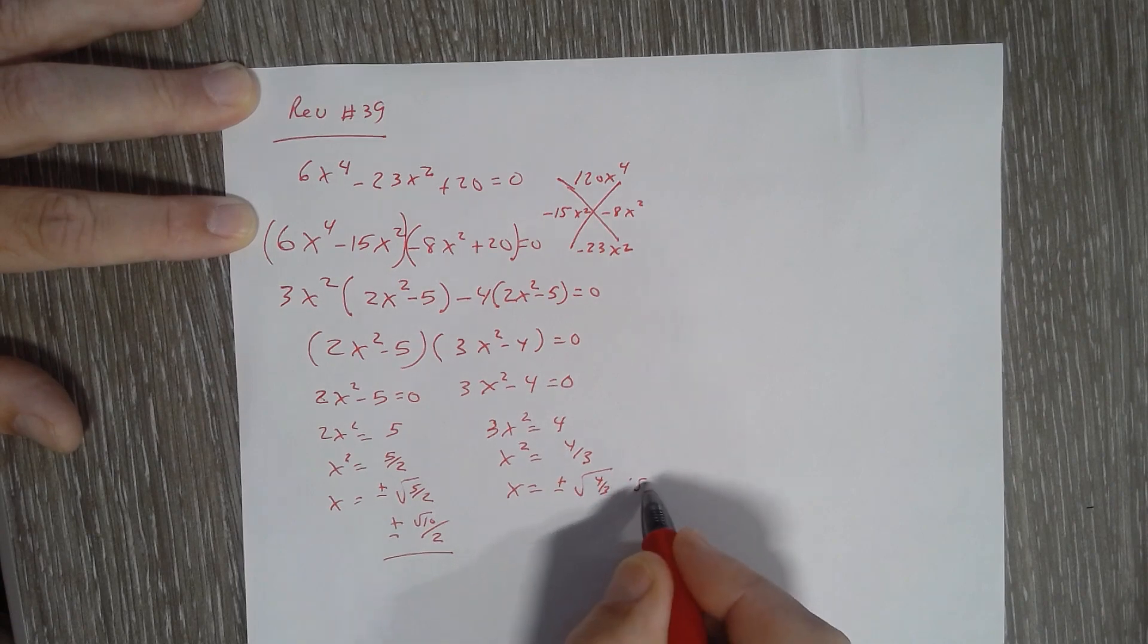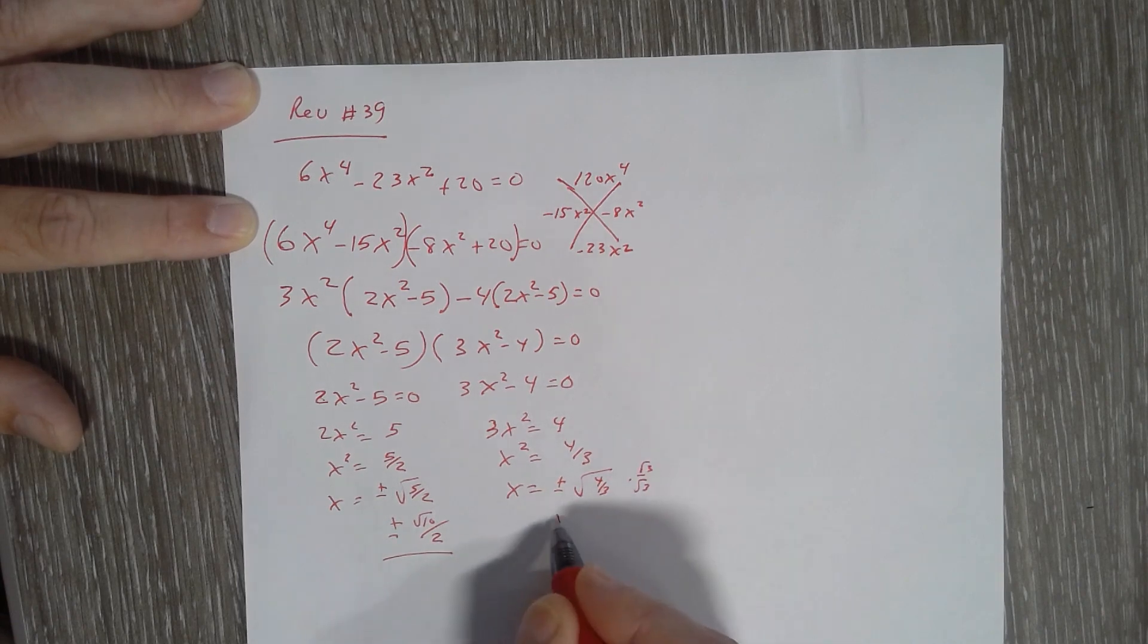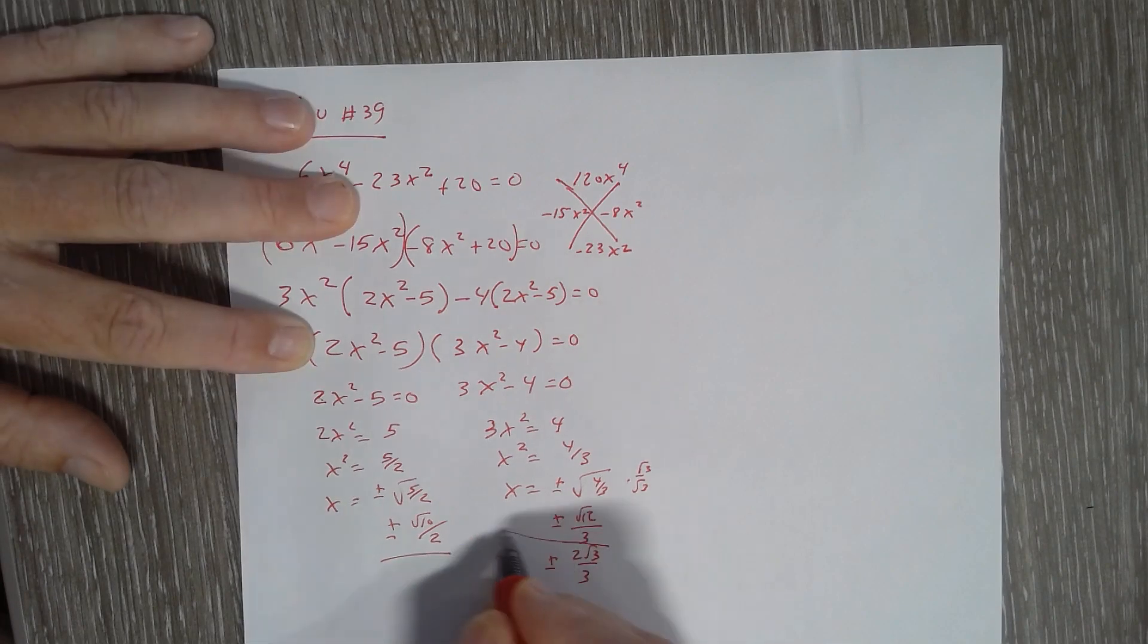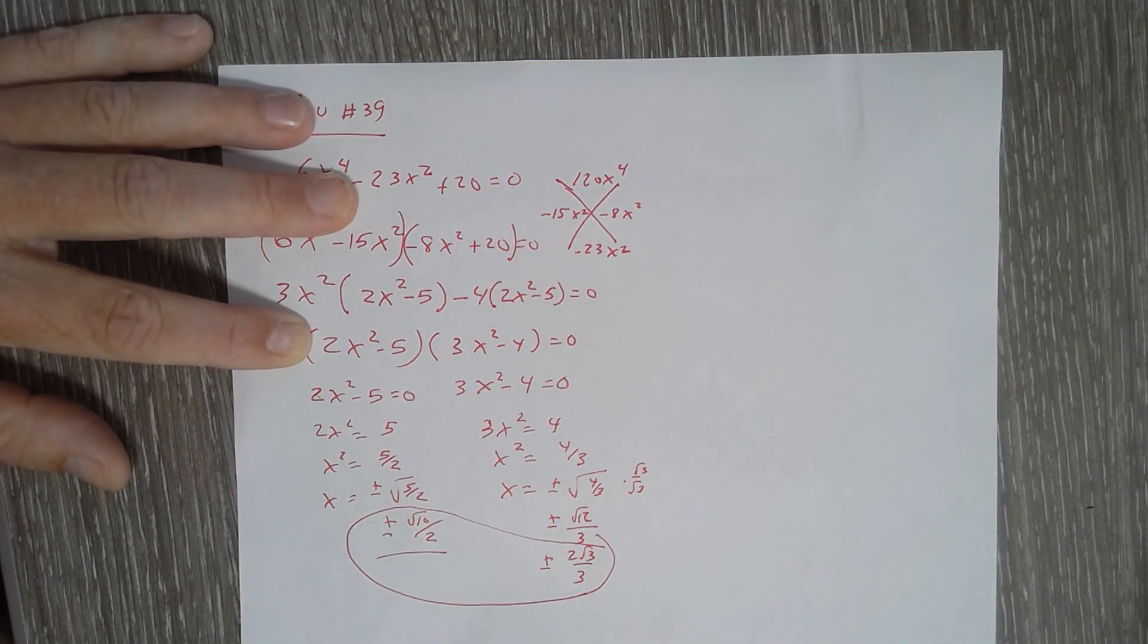So multiply top and bottom by the radical on the bottom, which gives me plus or minus the square root of 12 over 3. Which one more time, that's going to be 2 square root of 3 over 3. So that would be my four solutions.